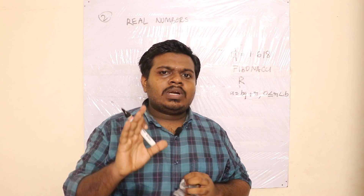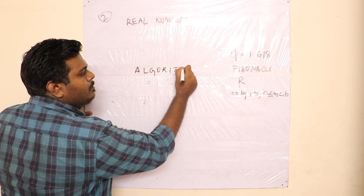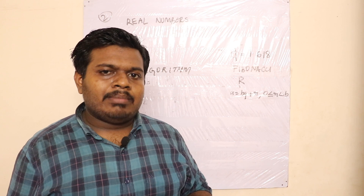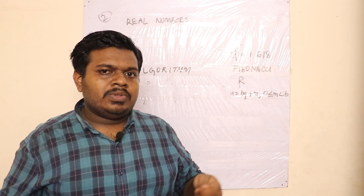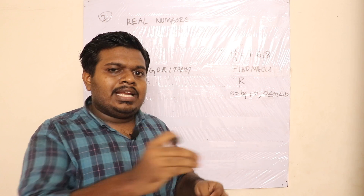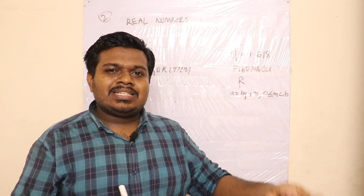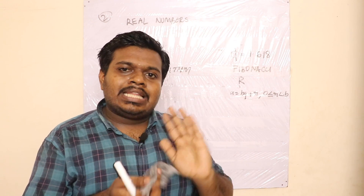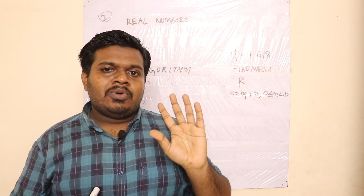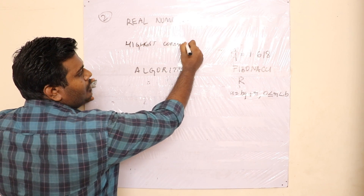Now the second concept is Euclid's Division Algorithm. An algorithm is a series of well-defined steps. That's why Euclid's Division Algorithm is used to find the Highest Common Factor — HCF.